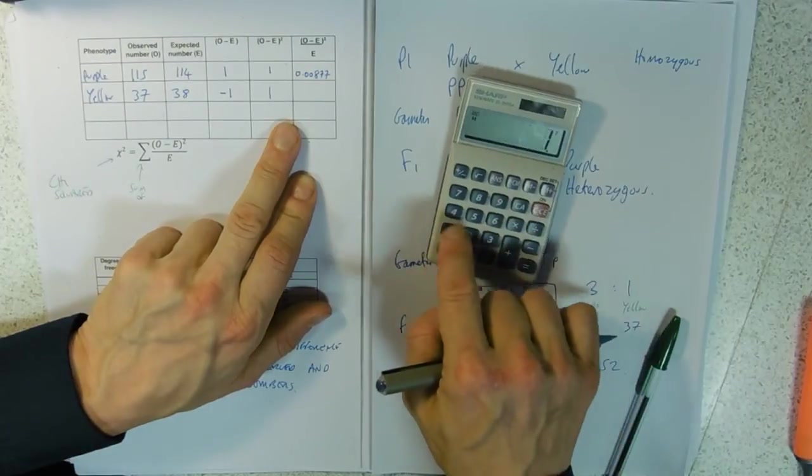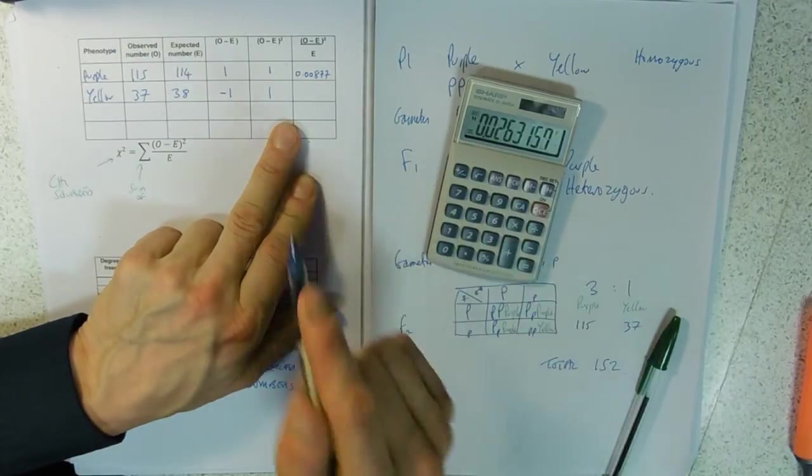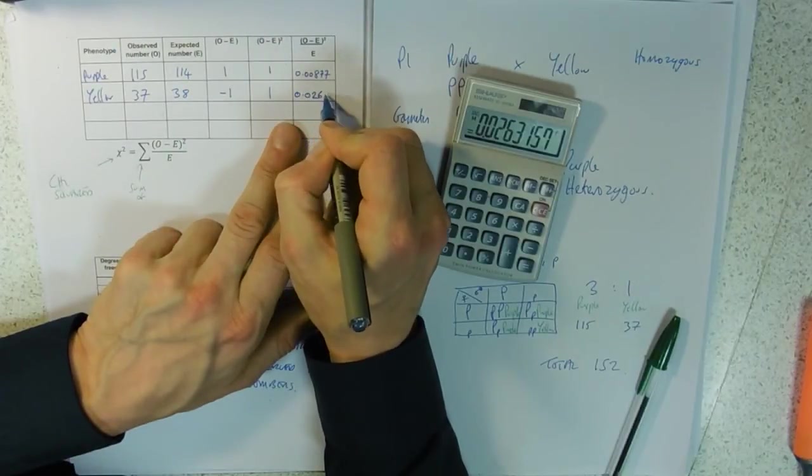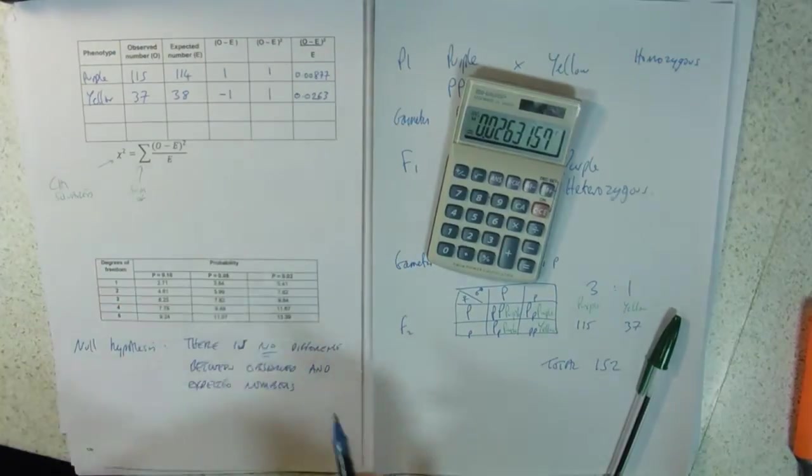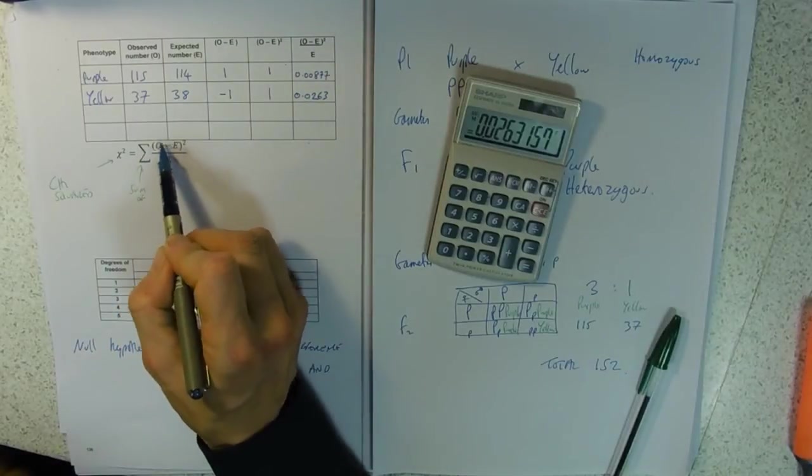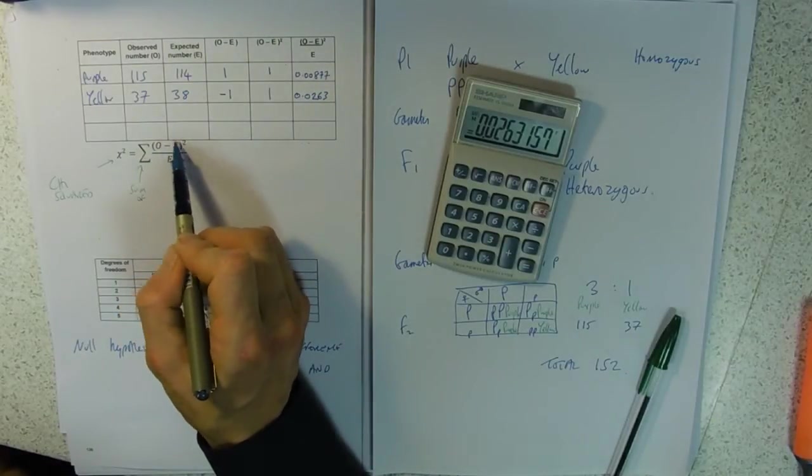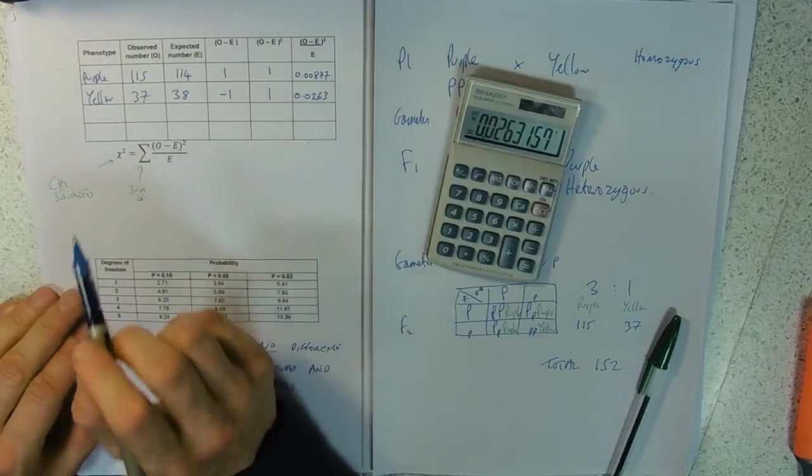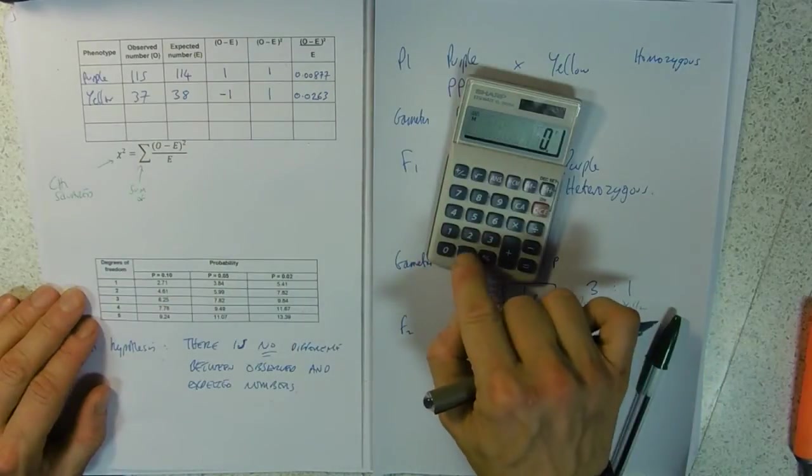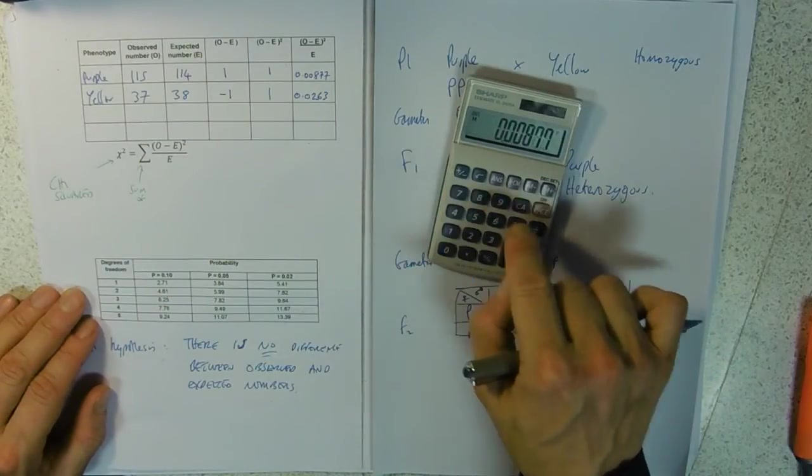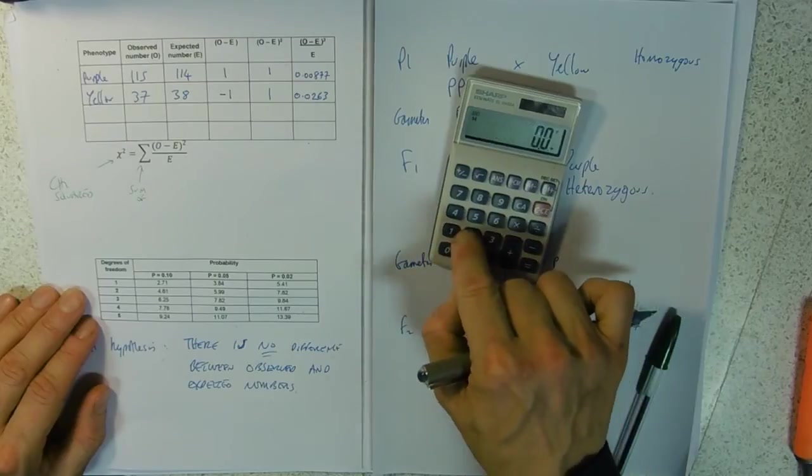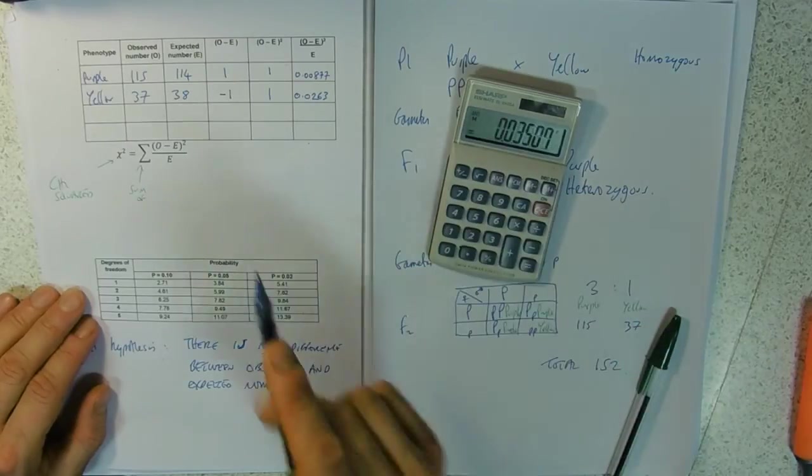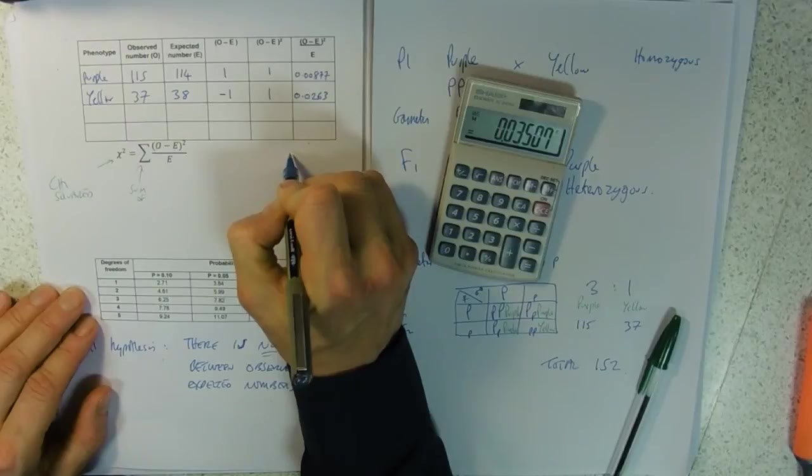And then for the second one, 1 divided by 38 should be 0.0263. That takes care of this entire bit over here, and we just need to add them all together.